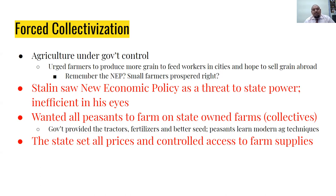Living on a collective sounds a lot like sharecropping in the United States after the Civil War. If you were living on a collective and wanted to get some crops on the side — since it's a state-owned farm and they control the means of production — you couldn't sneak in a plow or reaper, cut down some grain, and sell it on the black market in the Soviet Union.